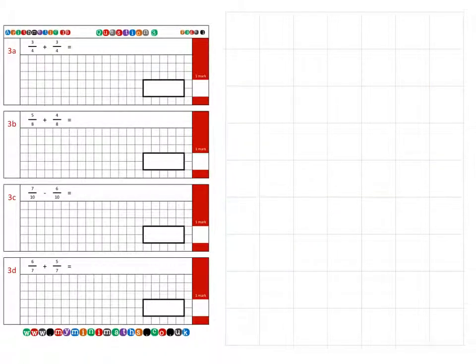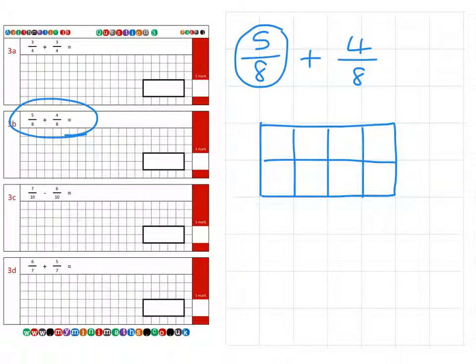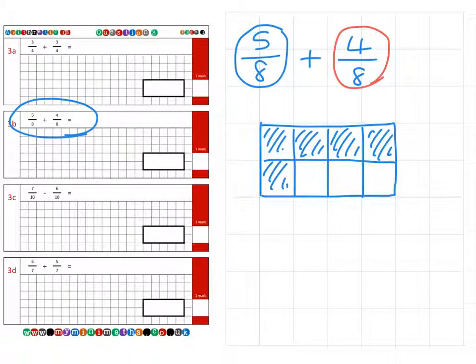And then to the second question, which is 3b, which is 5 eighths. I'm going to add 4 eighths to this. So first of all, if I take my first fraction here, which is 5 eighths, if I color 5 out of the 8, that's 4, 5 eighths.